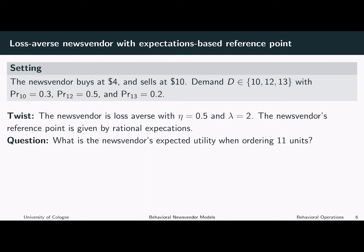Now we consider a loss-averse news vendor with a stochastic reference point. More precisely, we consider exactly the same setting as before, but now we assume that the news vendor's reference point is given by rational expectations.